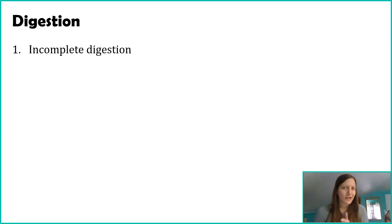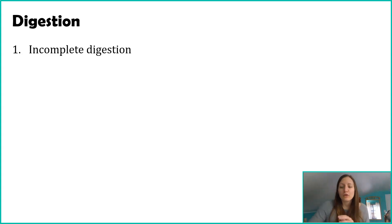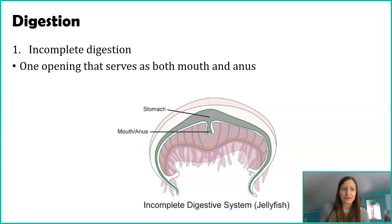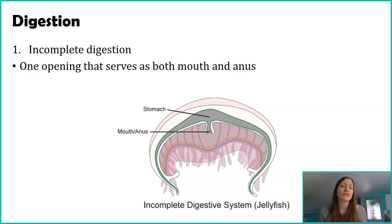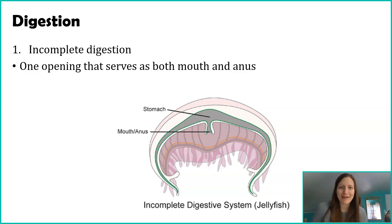The first one we'll talk about is incomplete digestion, and you can think of this as more primitive. By primitive, what I just mean is this came first, and then we saw the other type of digestion form. So incomplete digestion means that organisms only have one opening that serves as both the mouth and the anus — this is where food comes in, and this is where waste products go out.